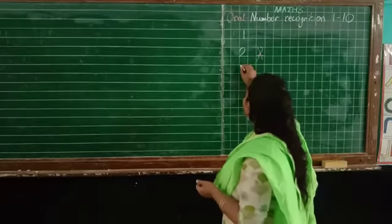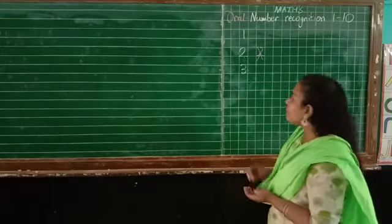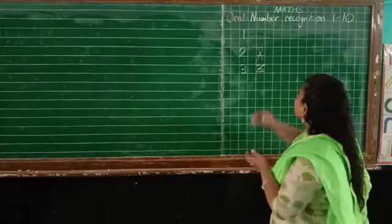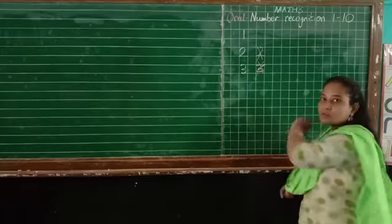Then 3 will be? One tummy, two tummy. Okay? See, if you write 3 like this, then it is wrong. One tummy, two tummy, 3.